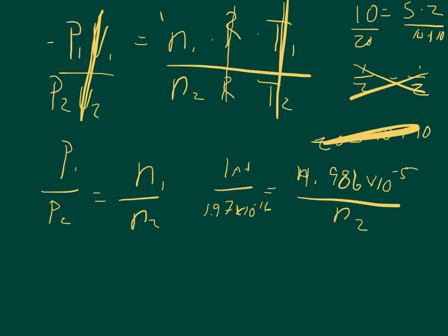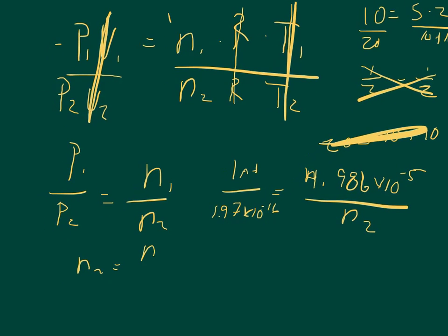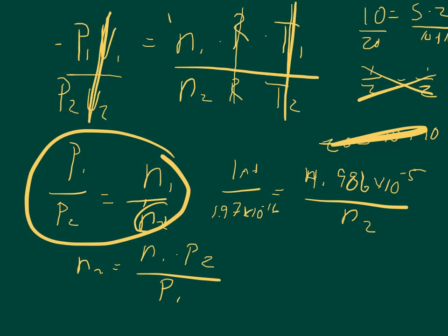So we need to solve for N2. N2 equals N1 times P2 divided by P1, solving for N2 using this equation. And so the N1 we said was 4.986 times 10 to the negative 5th, P2 we said was 1.97 times 10 to the negative 16th, and then we divide by P1 which we said was 1 atmosphere, so divided by 1 is whatever number the top gives us.